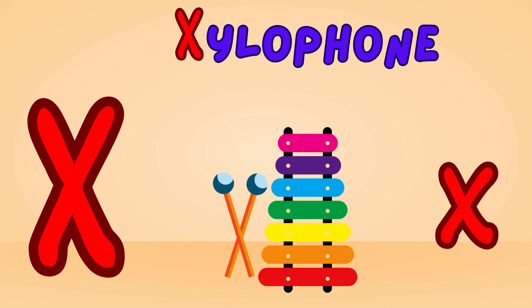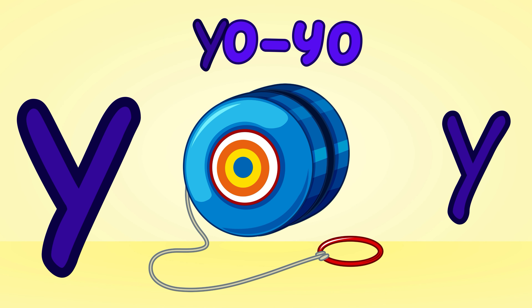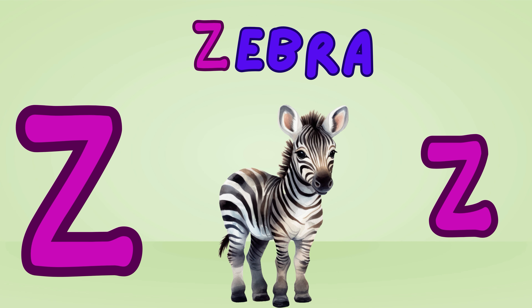X is for xylophone, xylophone, xylophone. This is an xylophone, xylophone, xylophone. Y is for yo-yo, yo-yo, yo-yo. This is a yo-yo, yo-yo, yo-yo. Z is for zebra, zebra, zebra. This is a zebra, zebra, zebra.